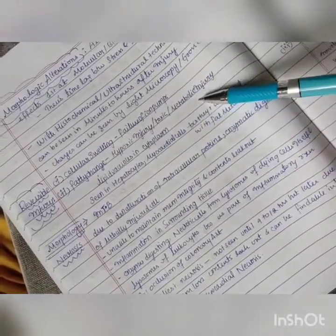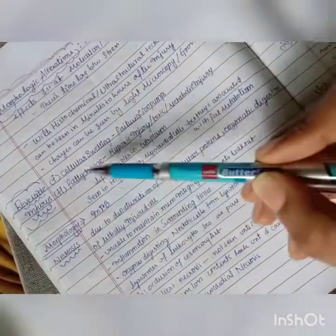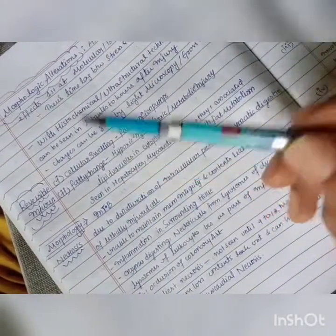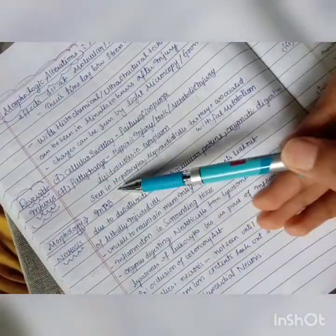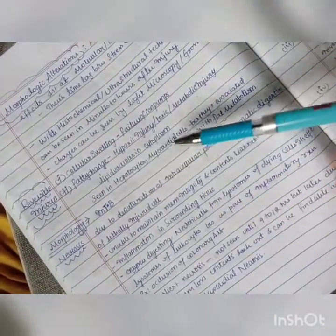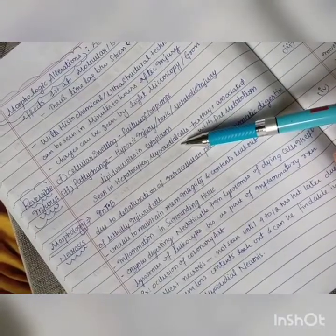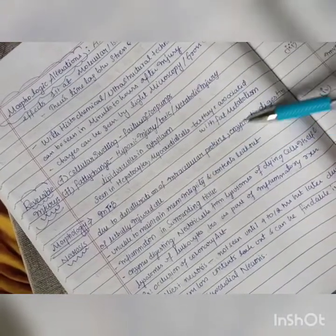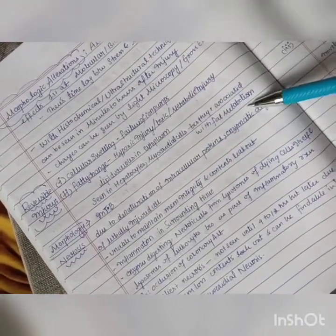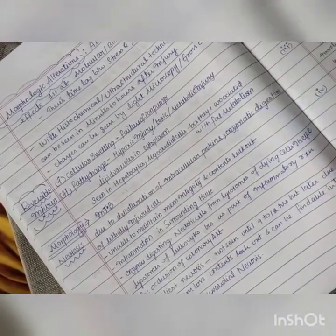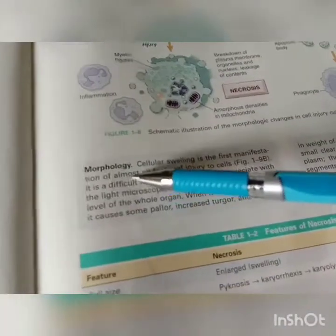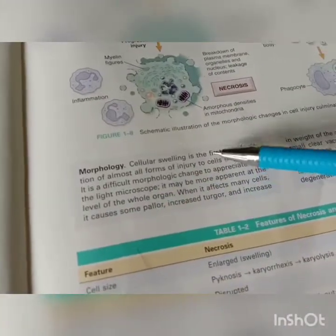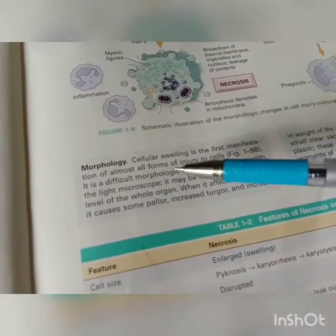Fatty changes may be due to three reasons: hypoxic injury, toxic injury, or metabolic injury. Fatty change refers to lipid vacuoles seen in the cytoplasm. It is seen especially in hepatocytes and myocardial cells because they are associated with fat metabolism.